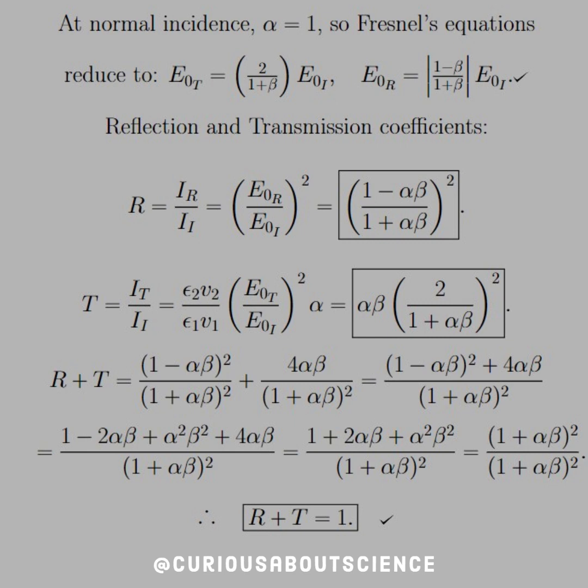The reflection and transmission coefficients, take the complex conjugate, or square them, of course, and we see that we get 1 minus alpha beta, 1 plus alpha beta squared. Similarly, transmission, alpha beta times 2 over 1 plus alpha beta squared, add them together, find a common denominator, add them across, factor them, simplify the numerator, simplify the numerator by factoring, and we see that they cancel, and we do get R plus T equal to 1.